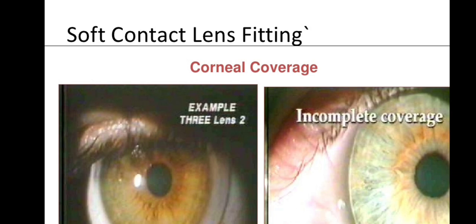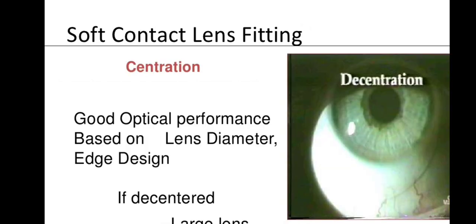Centration must also be assessed. When the patient looks up, a flat lens will lag downward — the lens is not properly centered, causing blurred vision in that gaze position. Decentration is a sign of a flat-fitting lens.